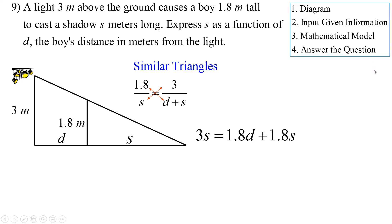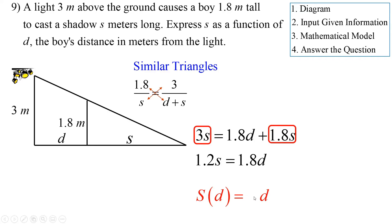Solving for S: 3S minus 1.8S equals 1.2S equals 1.8D. Dividing both sides by 1.2: S equals 1.8 over 1.2 times D, which simplifies to 3/2 times D. So S in terms of D is 3/2 D — the shadow length is always 3 halves the distance the boy is standing from the base of the light.